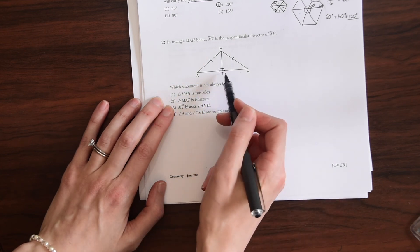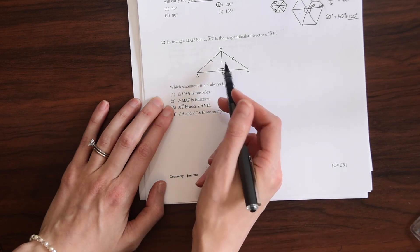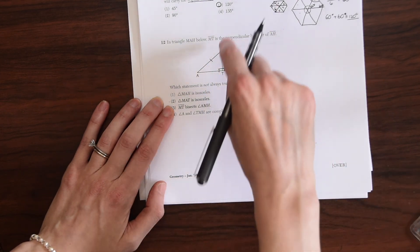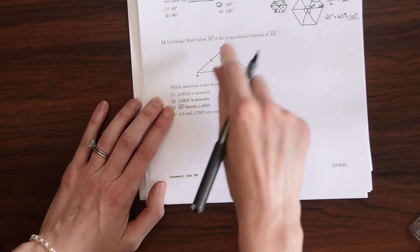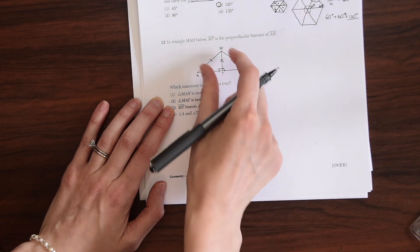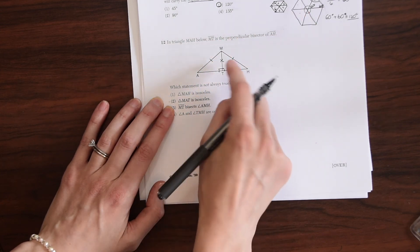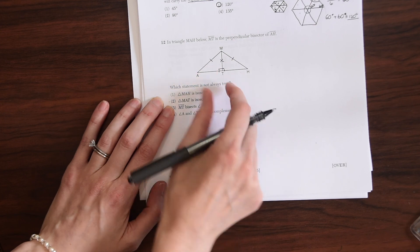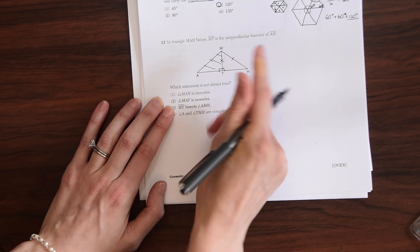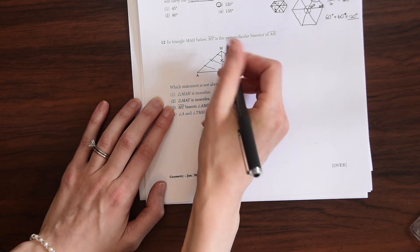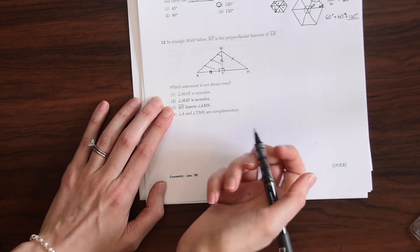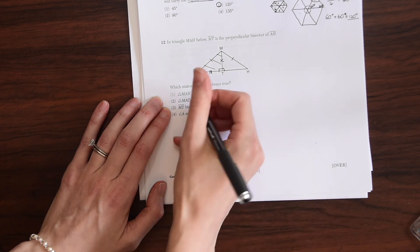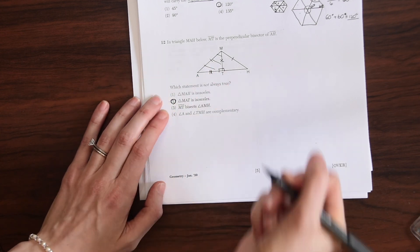MAT is isosceles. So that's not always true because this height can be any value, right? Right here. This meaning that since this can be any height, it doesn't have to be equal to this section right here for there for this triangle MAT. So here, this does not have to be equal to this in order for this to be a perpendicular bisector, right? So that's why two is our answer.